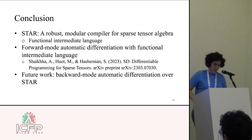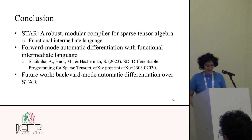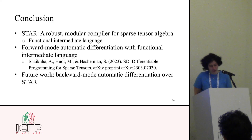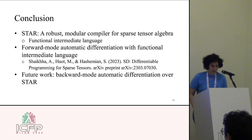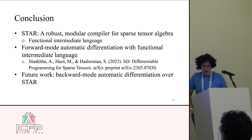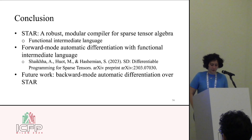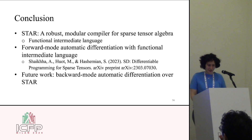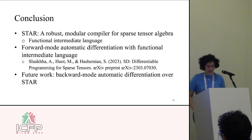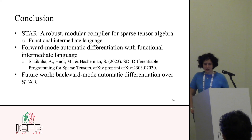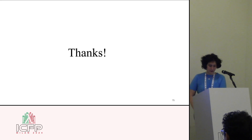To conclude, STAR is a robust modular compiler for sparse tensor algebra that uses multiple functional intermediate languages to go from a tensor algebra expression to C++ code. SDQL was previously also used for forward-mode automatic differentiation of sparse tensor algebra expressions, but was limited to forward mode. Future work could include implementing backward automatic differentiation on top of STAR.